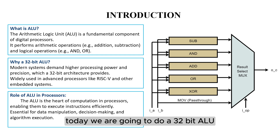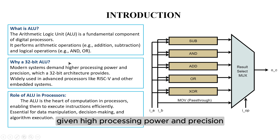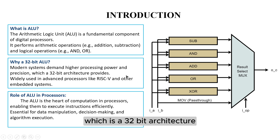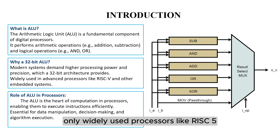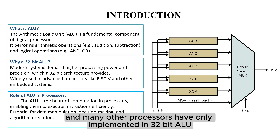Today we are going to do a 32-bit ALU. Why especially 32-bit? Because modern systems demand high processing power and precision, which is provided by a 32-bit architecture. Widely used processors like RISC-V and other embedded systems all have a 32-bit ALU. Like STM32 and many other processors have also been implemented with a 32-bit ALU.